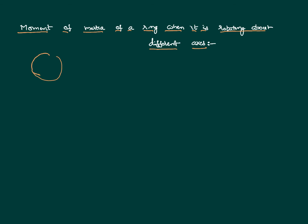This is the ring we are taking into consideration. Let us imagine there is an axis passing through the center perpendicular to the plane. The dotted line indicates it is perpendicular to the plane. If the ring has mass m and radius r, and it is rotating about an axis passing through the center perpendicular to the plane, its moment of inertia is mr², where m is the mass of the body and r is the radius of the ring.